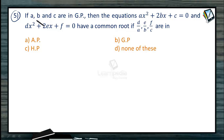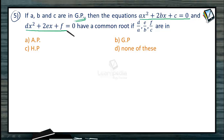Now the problem is: if A, B, C are in geometric progression, then the equations AX² + 2BX + C = 0 and DX² + 2EX + F = 0 have a common root. If D/A, E/B, and F/C are in which progression — which one among these options is going to be correct?